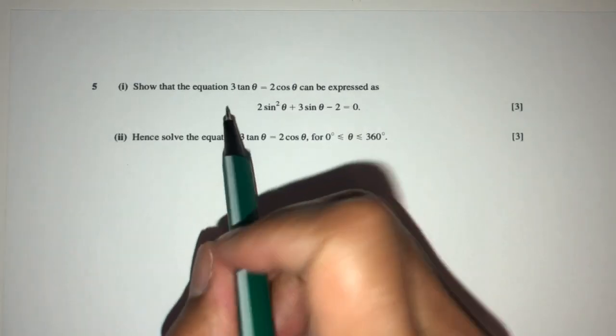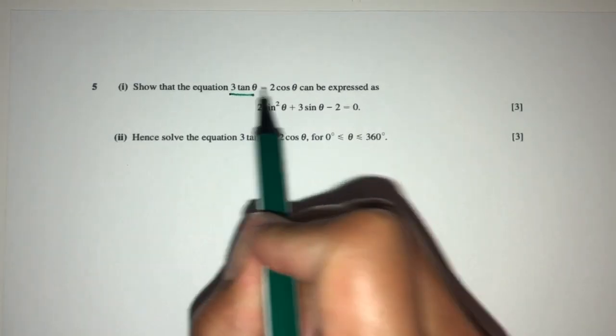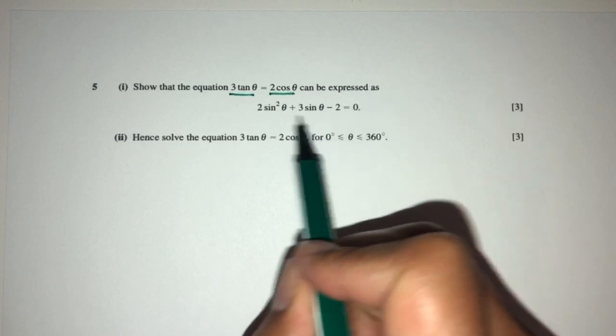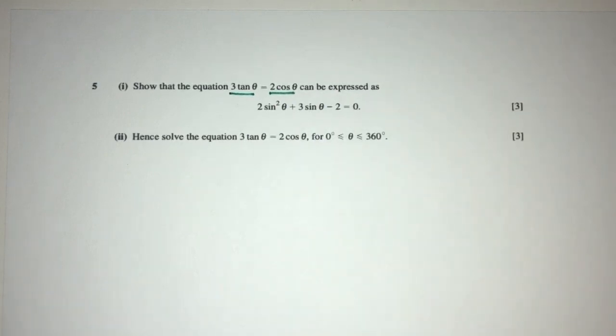Here we have to show the equation 3tan(θ) = 2cos(θ) can be expressed as this. At first it may look confusing, but we have to always proceed step by step.